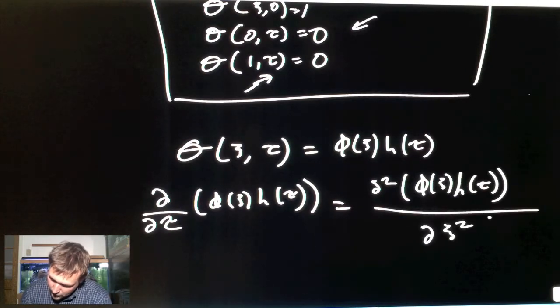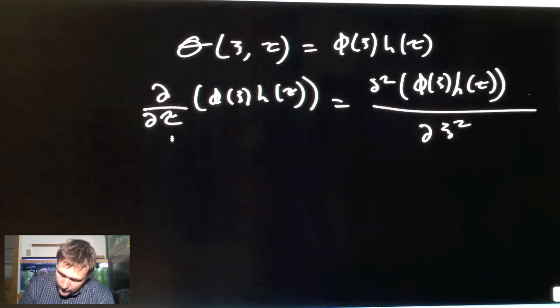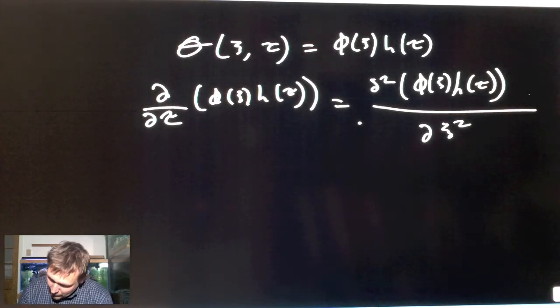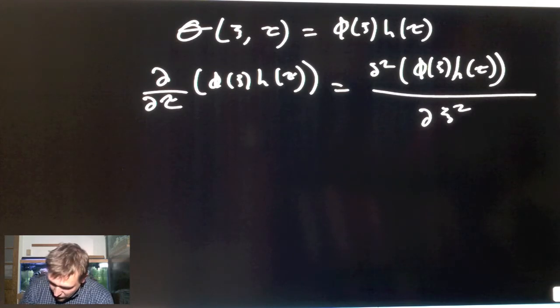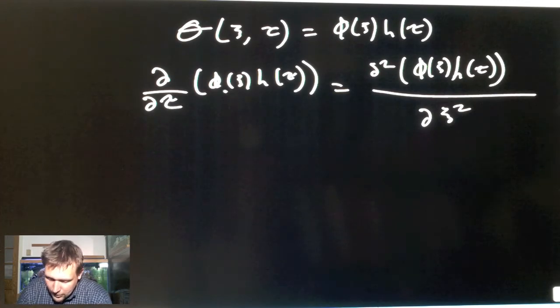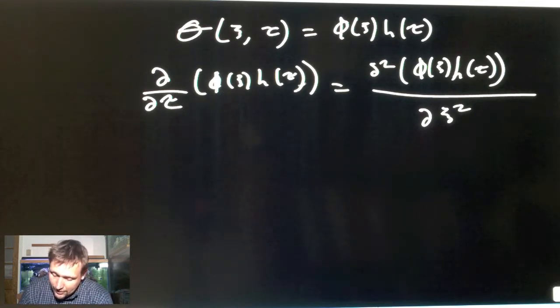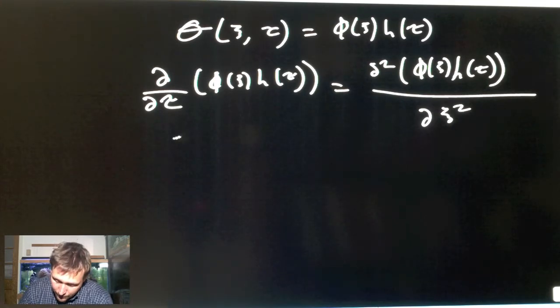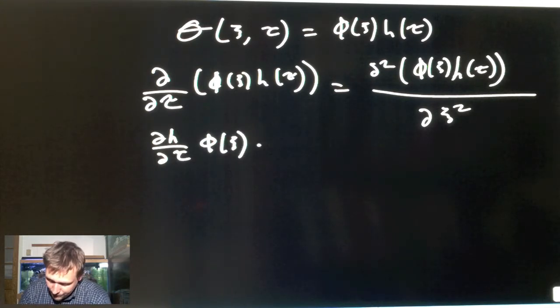First substitute this approximation H of τ for θ equals ∂²φ function of ψ times H of τ, ∂τ∂ψ². If you look at these partial derivatives, you'll notice it's a partial derivative of two functions that have different dependent variables, so you only have to take the derivative of one term on each side.